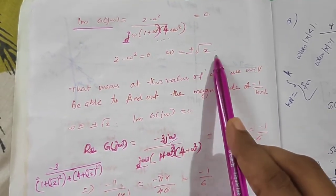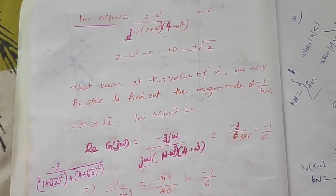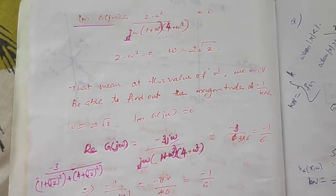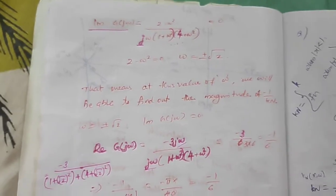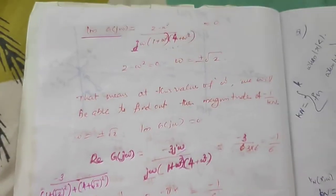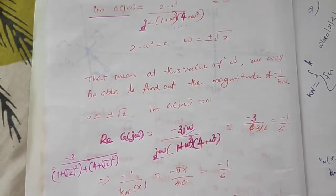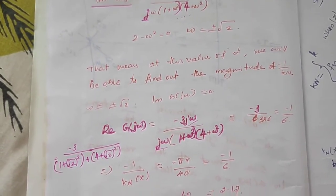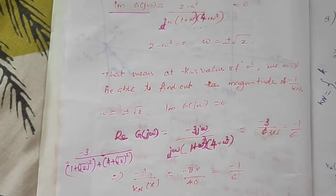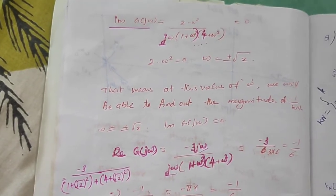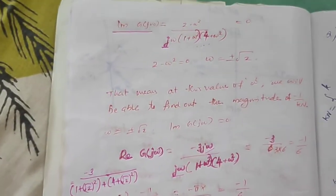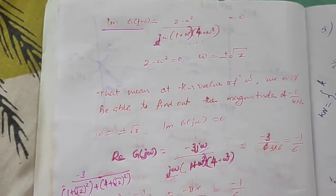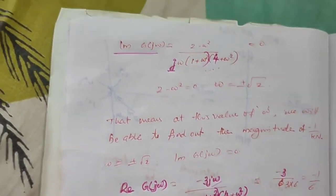Solving gives ω = ±√2. Since frequency must be positive, we take ω = +√2 = 1.414 rad per second. This is the frequency of the limit cycle.